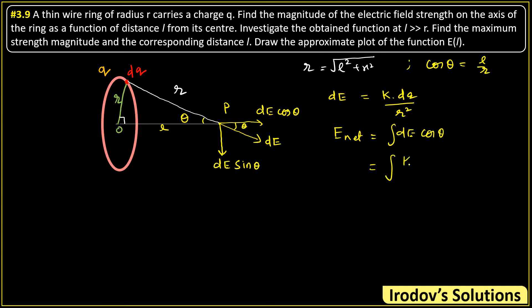Substituting dE = k·dq / r² and cos theta = l / r, the net field is the integral of (k / r²)·(l / r)·dq. All terms — k, l, and r — are constant for every element on the ring since every element has the same distance small r and makes the same angle theta. This holds whether or not the distribution is uniform. The integral of dq over the whole ring simply gives the total charge q.